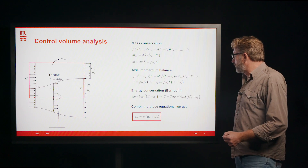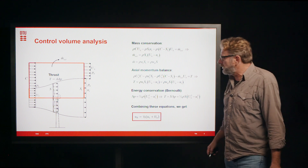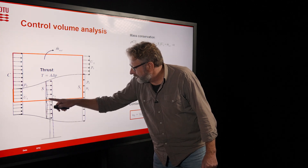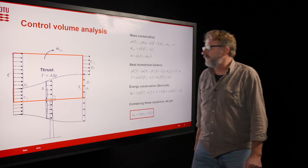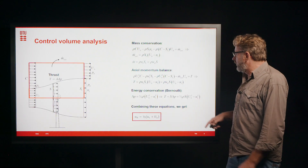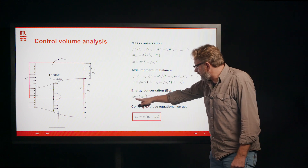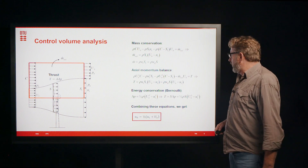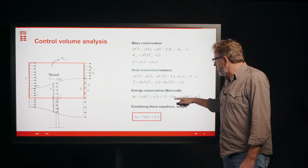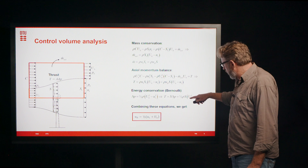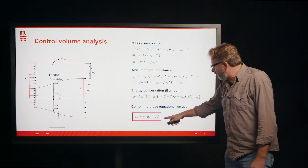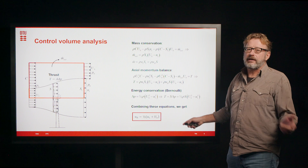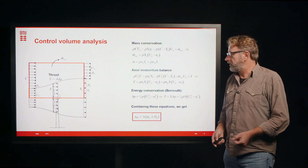The next part is to use energy conservation, and here we use simply the Bernoulli equation. Since the flow is one-dimensional, we can apply Bernoulli along the centerline — from upstream to just in front of the rotor, and from just behind the rotor to downstream. We cannot apply it over the rotor because there is a pressure jump. But by applying it on both sides, we find that this pressure jump is exactly equal to the difference in dynamic pressure upstream and downstream. Combining that with the axial momentum balance, we find a very important result: the velocity at the rotor plane is exactly equal to the average of the upstream and downstream velocities. This result comes only from 1D momentum analysis.